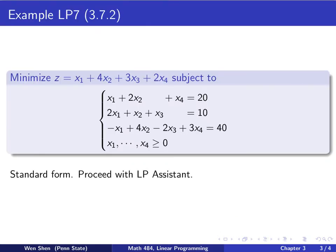Let's take a look at our second example. I call it LP7. This is the example from the textbook 3.7.2. So take a look at this problem. I have four variables, and I have three constraints. It's given in the standard form. So you know that we can put the standard form directly into the LP assistant, and adding artificial variables to make it in canonical form. So then we'll now proceed with the LP assistant in the next page.